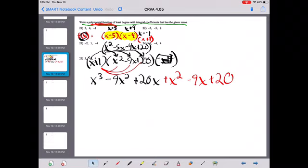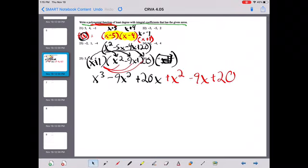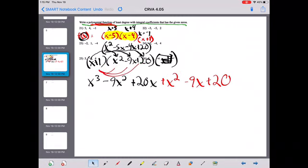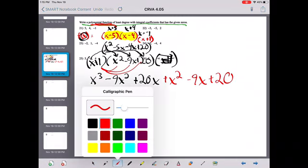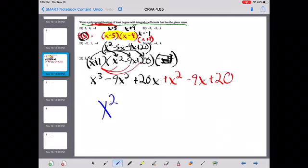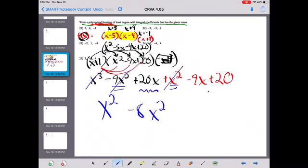Sometimes people like to take this. Oh, I didn't break up. Well, anyway, find your like terms. You've got x to the third. Negative 8x squared. 11x.